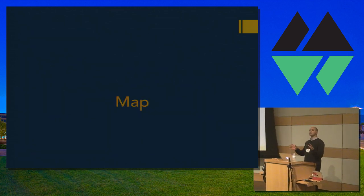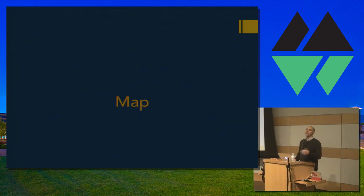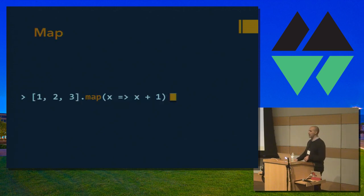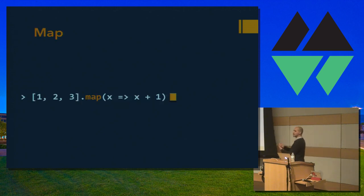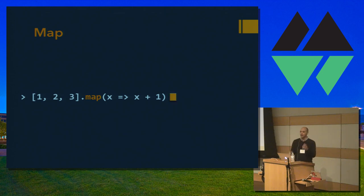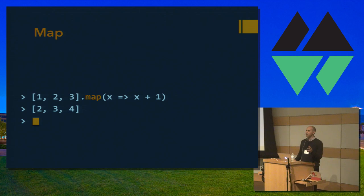Who's used map before? I take a collection, I apply a function to every item in that collection, and I generate a new collection. So in this case, we're going to take one, two, three, add one to each item, and get two, three, four.